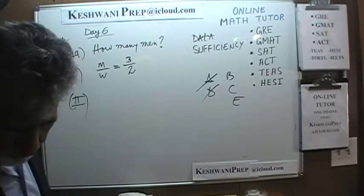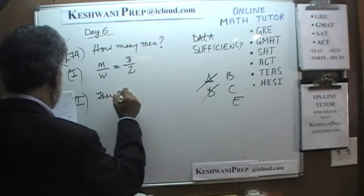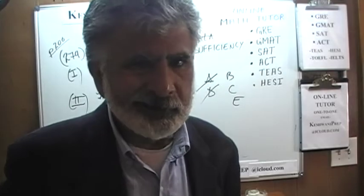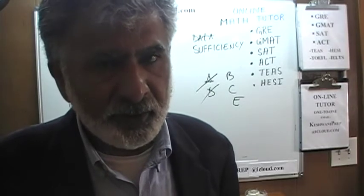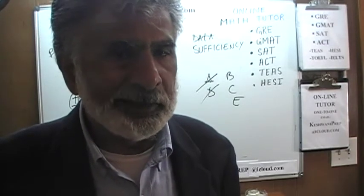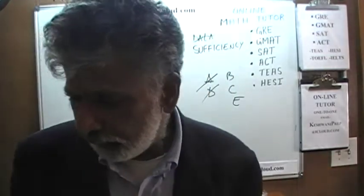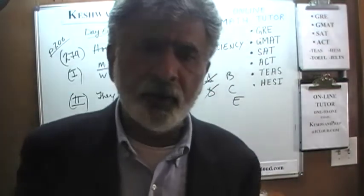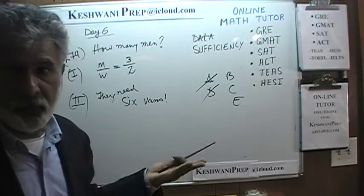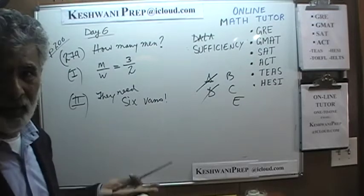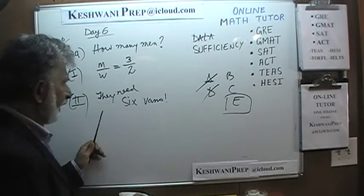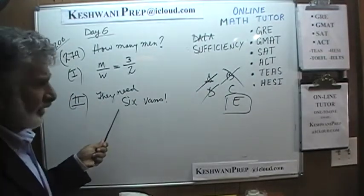The second statement says they need six vans to transport these people. Had they told us how many people can fit in each van, we could figure out the total and then solve for the two unknowns. But simply knowing there are six vans required does not tell us how many men are going. The second statement by itself is also not enough. When we put the two statements together it's still not enough. Therefore the answer is E.